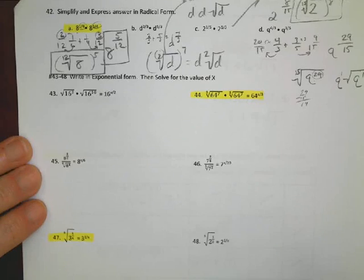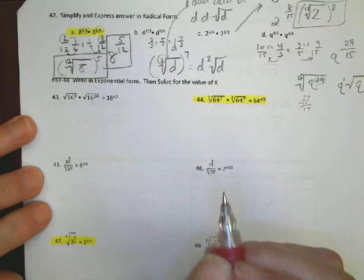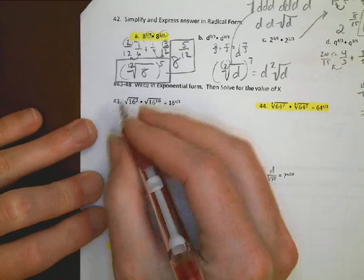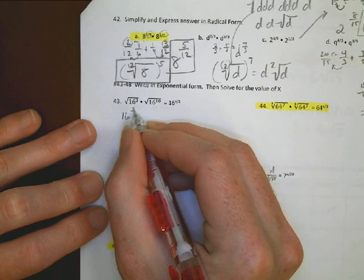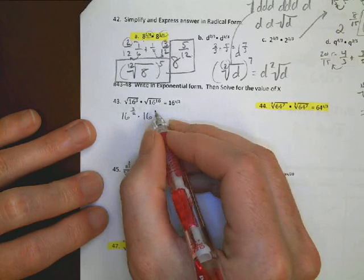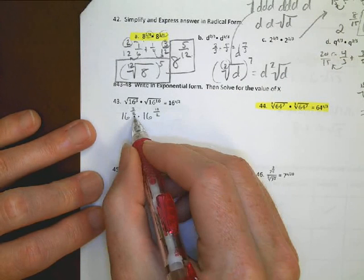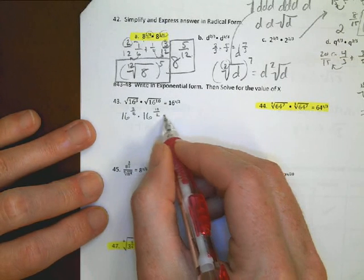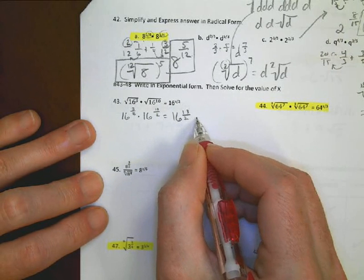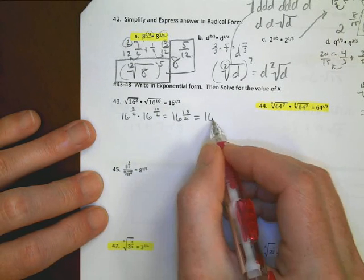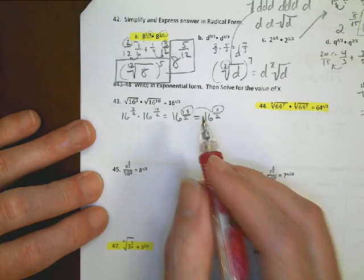So number 43, write in exponential form, then solve for x. So here we go. This works like this. I have 16, and there's my exponent over 2, times 16, and there's my exponent over 2. I have the same denominator, so I can just add across. So this equals 16 and then 13 over 2. That's equal to what it says here, 16 to the x over 2. So my missing number is 13. x equals 13.